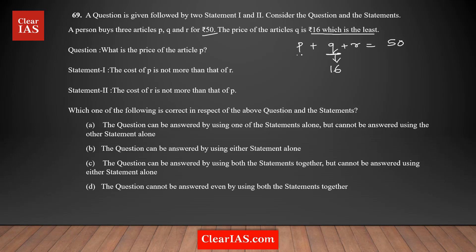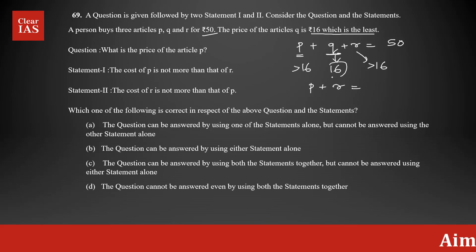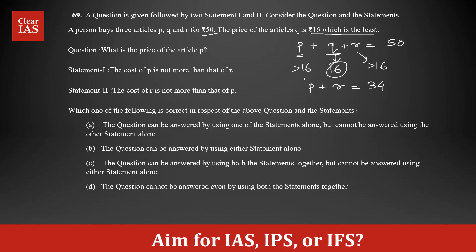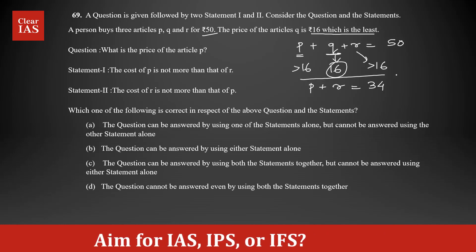That means the other two articles should cost greater than 16. If you simplify further, we can write P plus R equals — taking 16 to the other side — P plus R equals 50 minus 16, which equals 34. So, this is the equation we have.